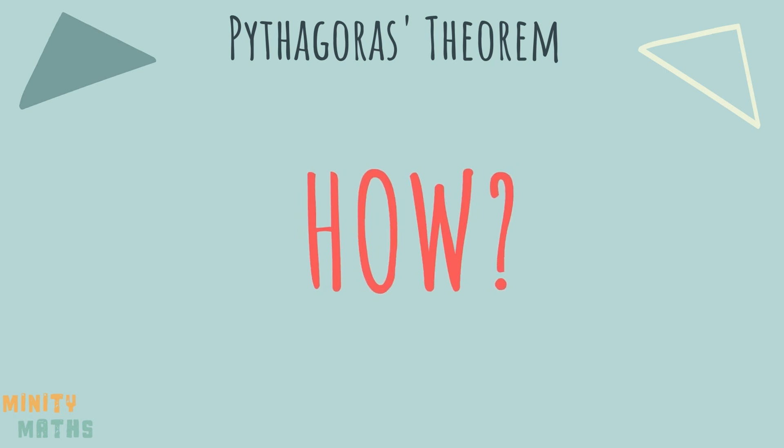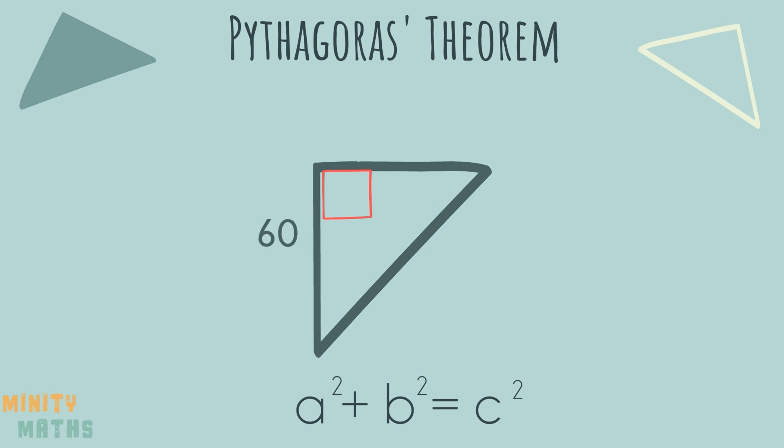So how do we do this? First you may find it helpful to write down the formula each time you use it. Then label the sides a, b, and c, remembering that c is the hypotenuse.